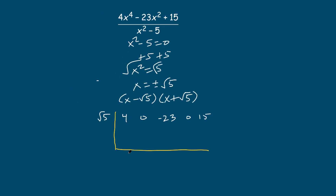In the next example, bring down the four. Four times the square root of five is four square root of five. Zero plus four square root of five is four square root of five. Now four square root of five times square root of five: square root of five times square root of five is five, times four is twenty. Negative twenty-three plus twenty is negative three. Negative three times square root of five is negative three square root of five. Zero plus negative three square root of five is negative three square root of five. Negative three square root of five times square root of five is negative fifteen, which equals zero.